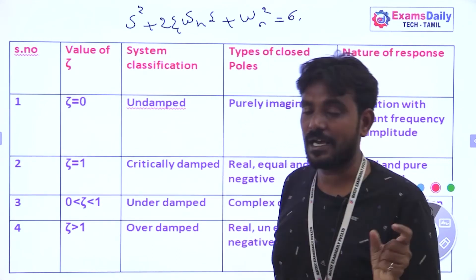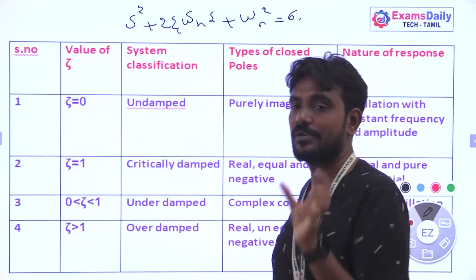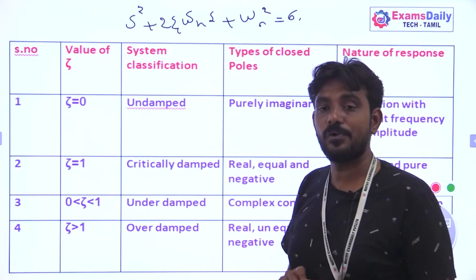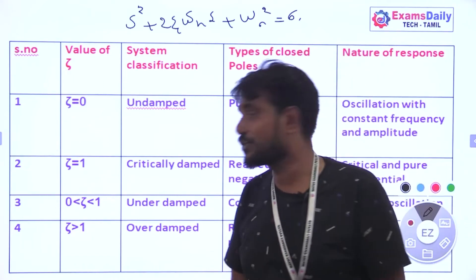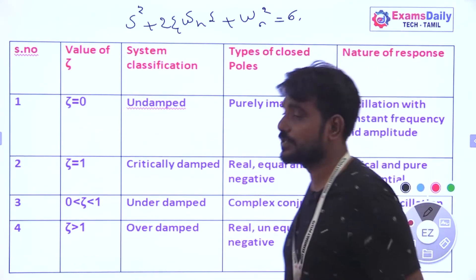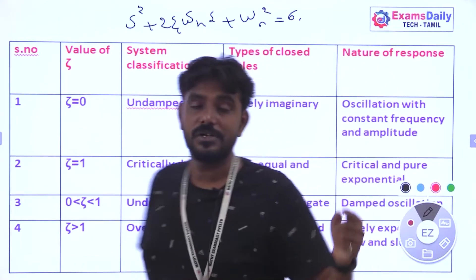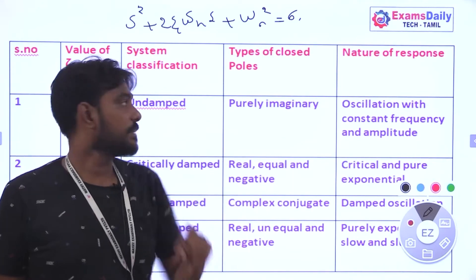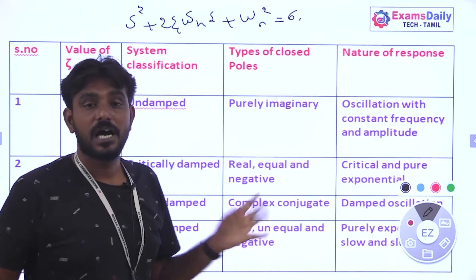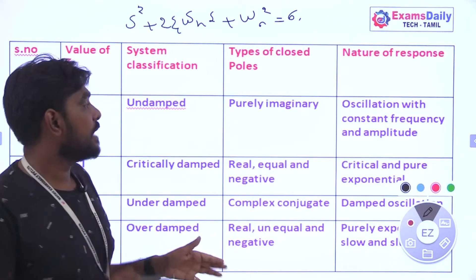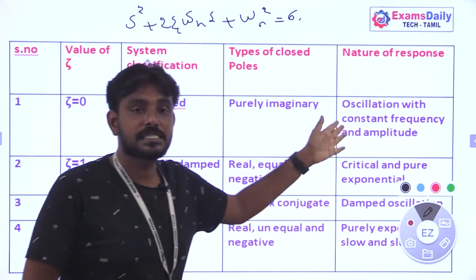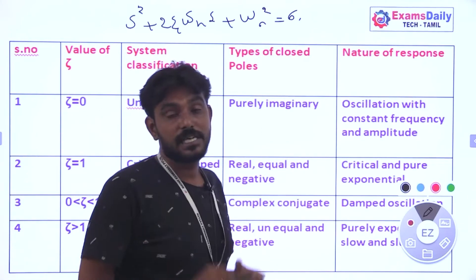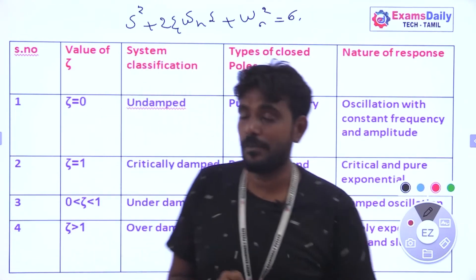For the undamped system where ζ equals 0, the poles are purely imaginary — these are closed-loop poles on the imaginary axis. The response is oscillation with constant frequency and amplitude.